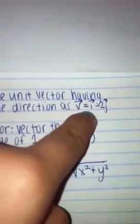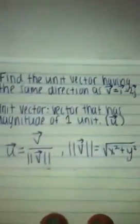And the x and y is in the original problem. This is the vector v equaling x plus y. So x would be 1, y would be negative 2.